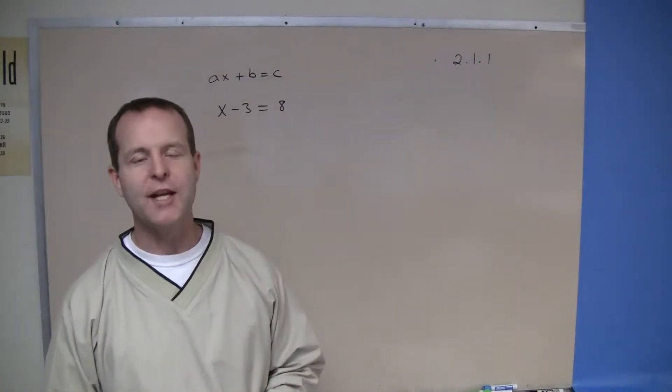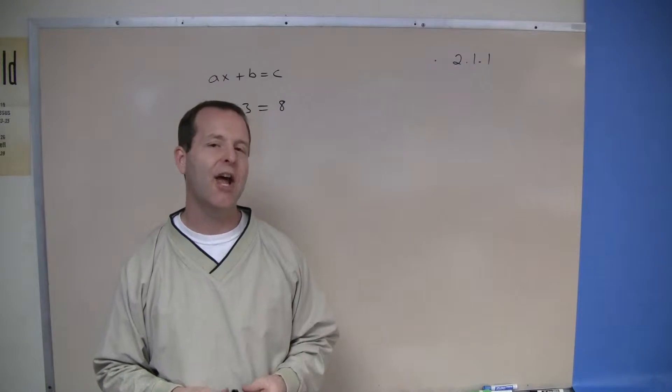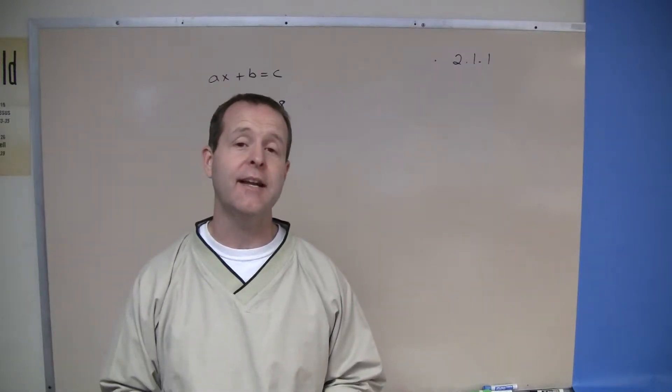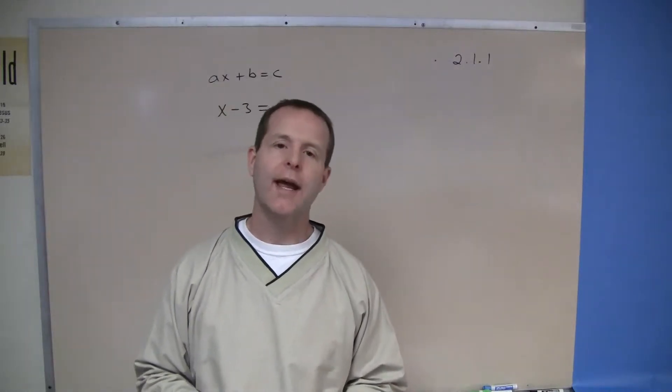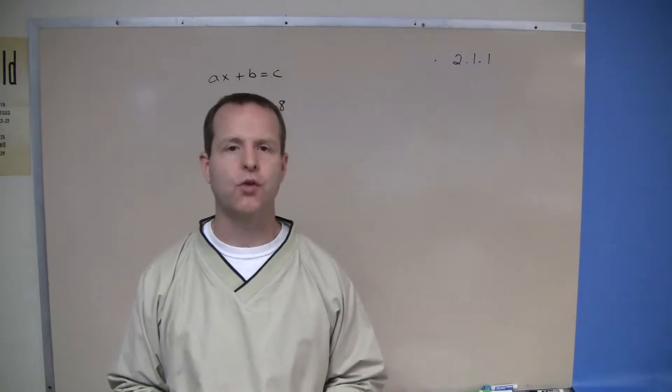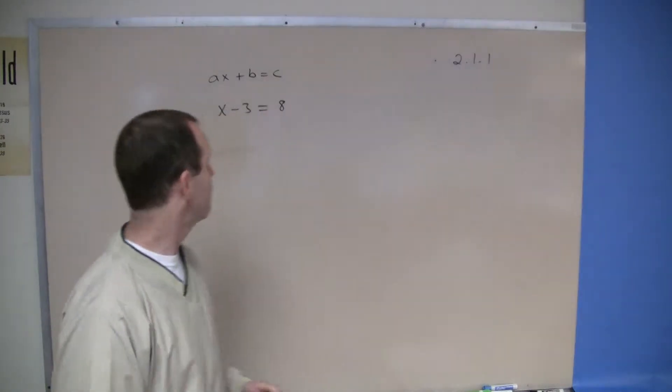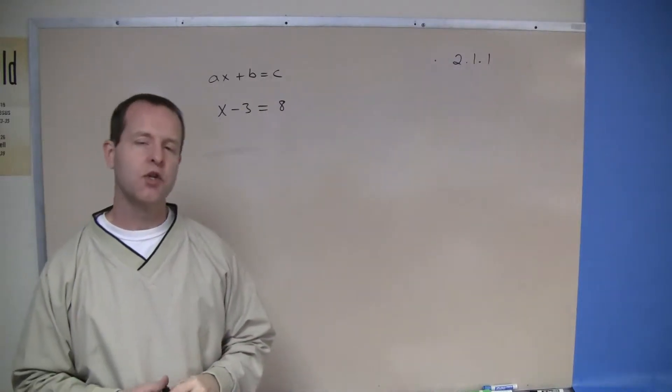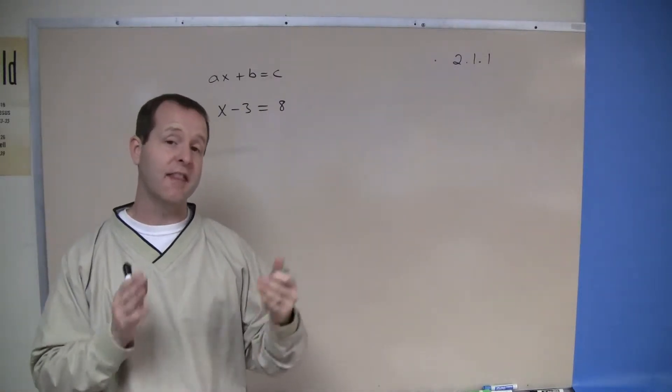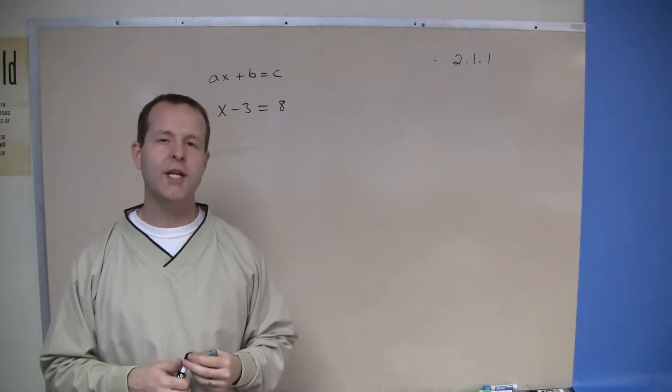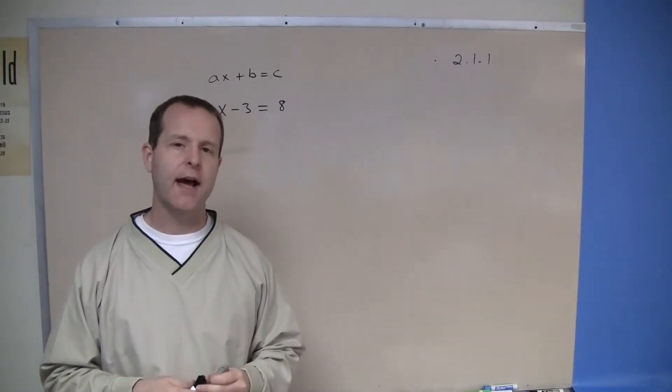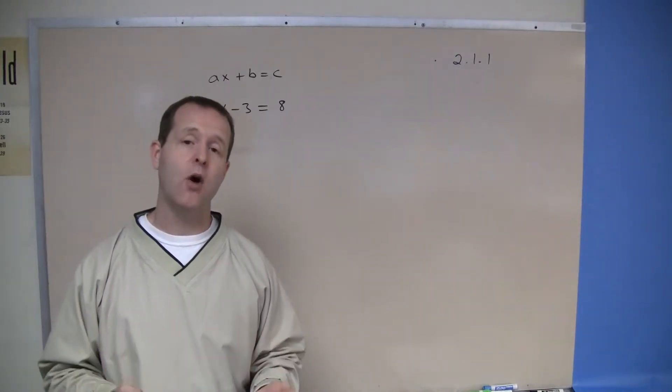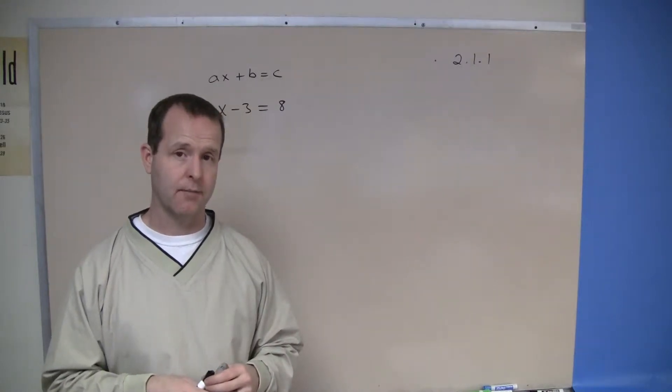As we approach chapter 2, we get to start learning some tools to help us solve linear equations. What I have behind me is a general description of a linear equation: AX plus B equals C. If I find any equation I can fit into that form, I have a linear equation. Once I identify that, there are some properties that will help me solve that particular problem.